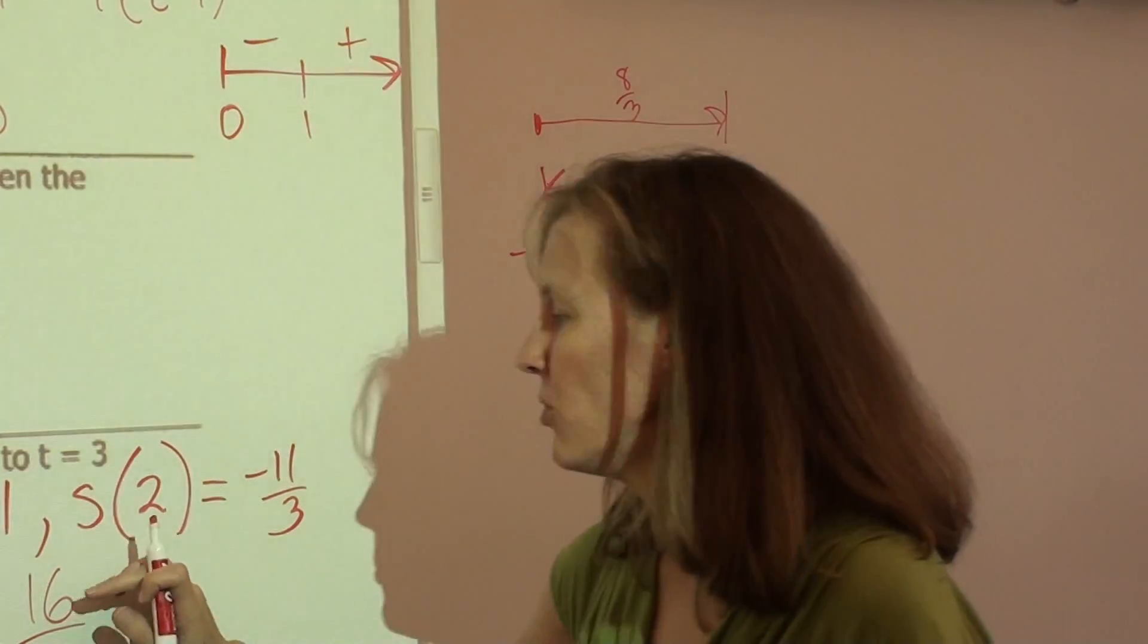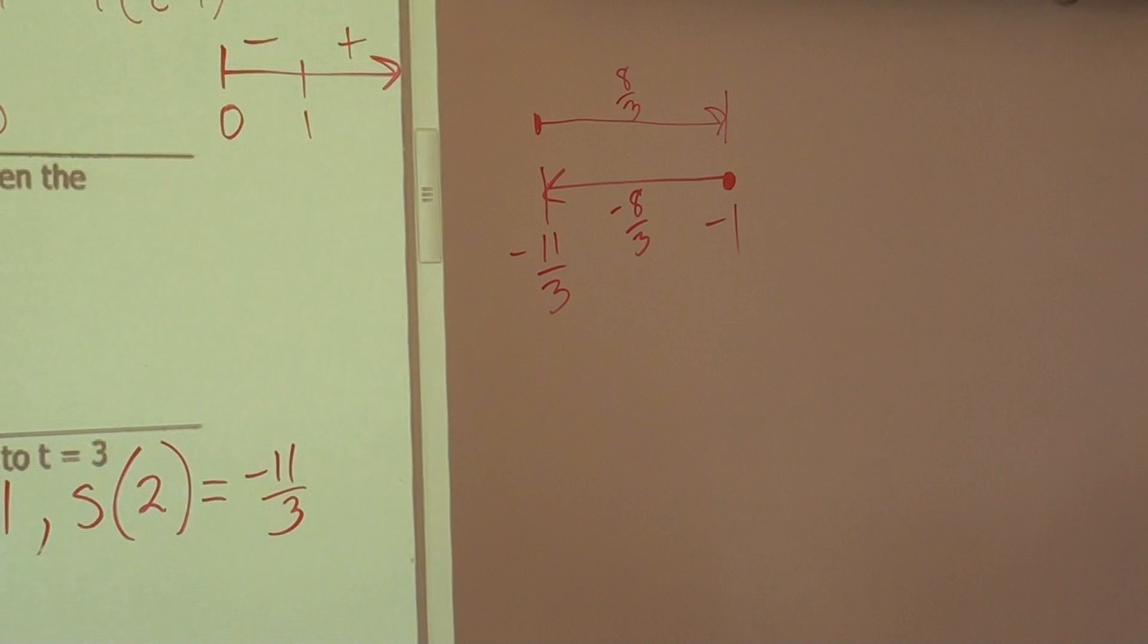If you want a formula, here would be your formula. It would be |S(3) - S(2)| plus |S(2) - S(0)|. It's the distance for each segment that you went.